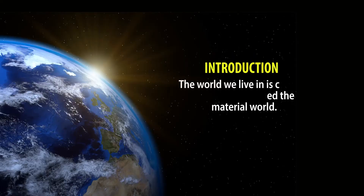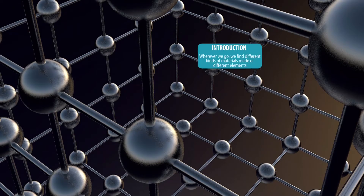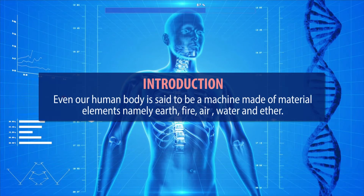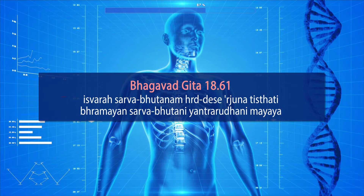The world we live in is created by God and is called the material world. Wherever we go, we find different kinds of materials made of different elements. Even our human body is said to be a machine made of material elements, namely earth, fire, air, water and ether. The reference for this we find in one of our scriptures called the Bhagavad Gita, in text number 18.61, where it is said...